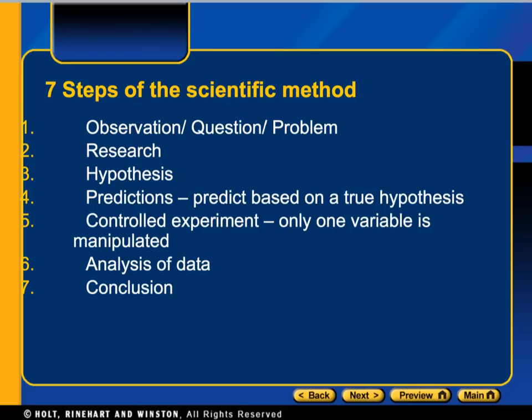Step number one of the scientific method is observation — figuring out what your experiment is going to be based on. Step two is doing a little bit of research. Step three, you make a hypothesis — an educated guess based on your research about what you expect to happen. You also make predictions based on whether your hypothesis is true. Then you run your controlled experiment, in which only one variable is being manipulated while all other conditions stay constant.